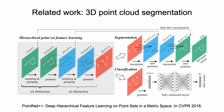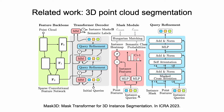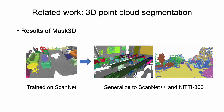One typical pipeline for 3D scene segmentation is using deep neural networks to process the point cloud of the target scene to predict segmentation results. These methods generally require annotated point clouds for training. However, annotating point clouds is costly, and there is a lack of datasets with the large scale and diversity similar to 2D image datasets. As a result, these methods are often limited to specific types of scenes and struggle to generalize to in-the-wild scenes.